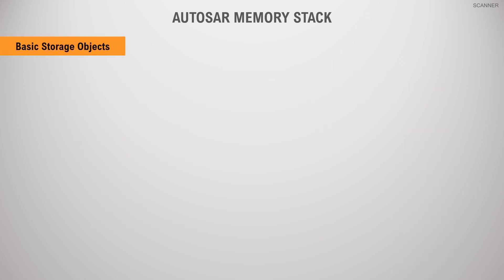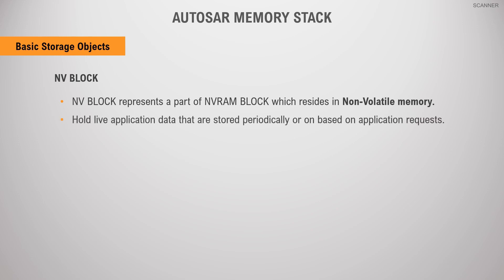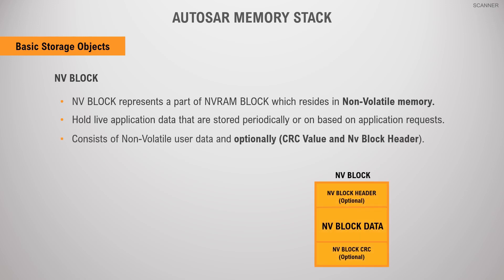An NV block represents a part of the NVRAM block which resides in non-volatile memory. The contents of an NV block can be modified during program execution. It is used to hold application data that are stored periodically or based on request. It consists of non-volatile user data and, optionally, a CRC value and NVRAM block header. This is a mandatory basic storage object of a non-volatile RAM block.